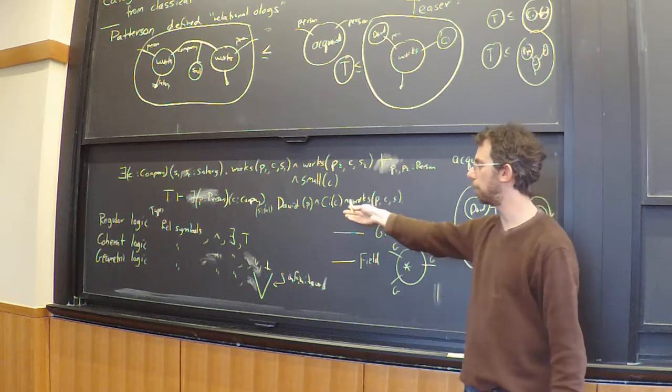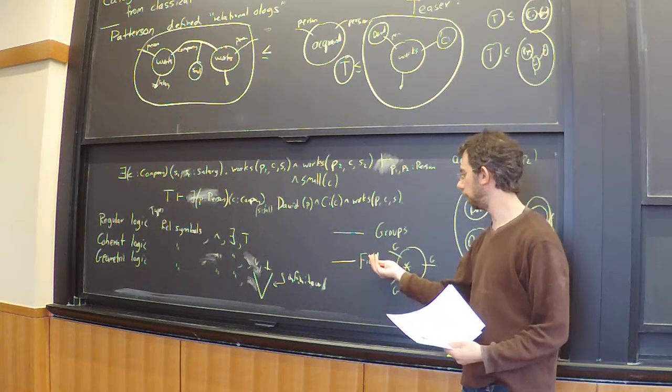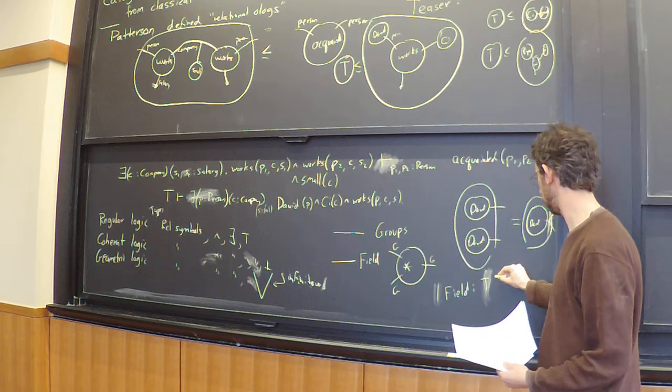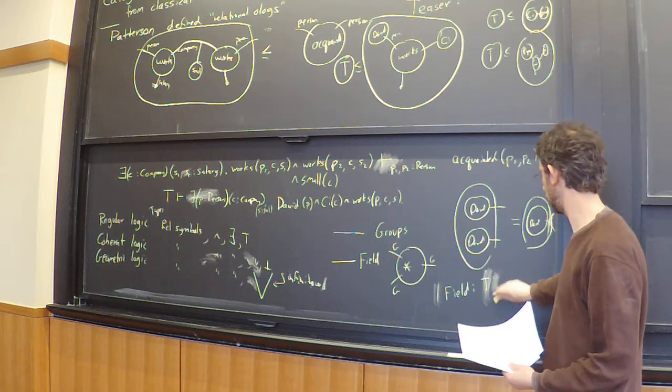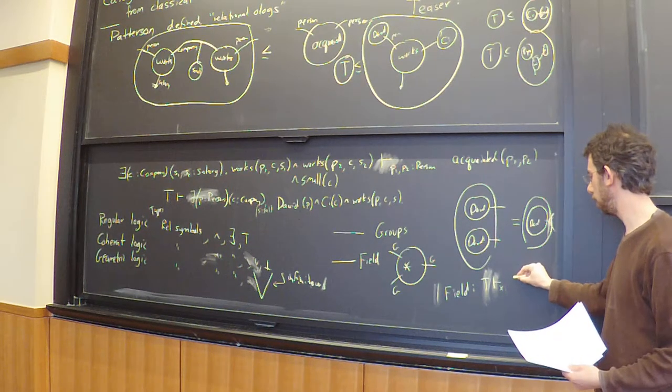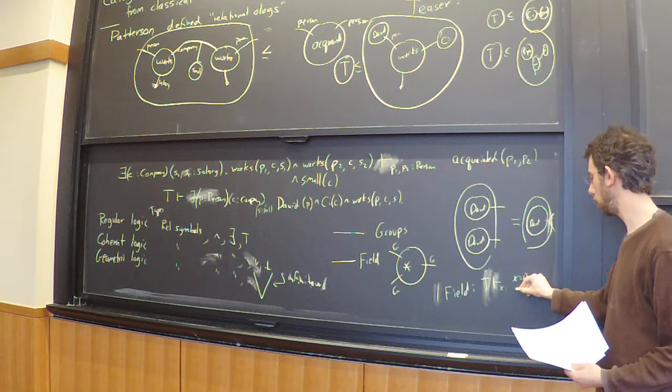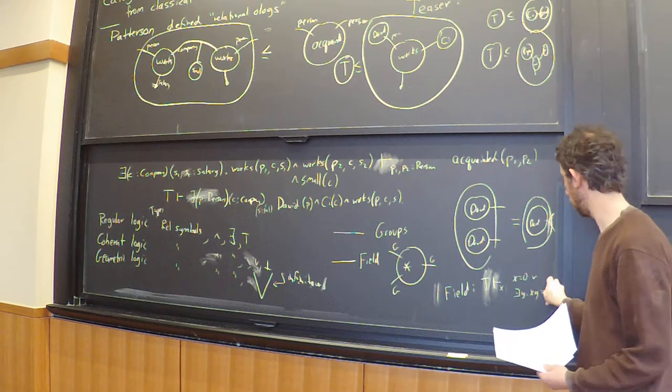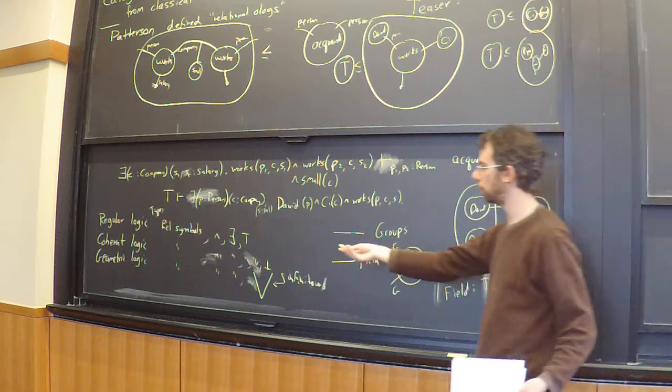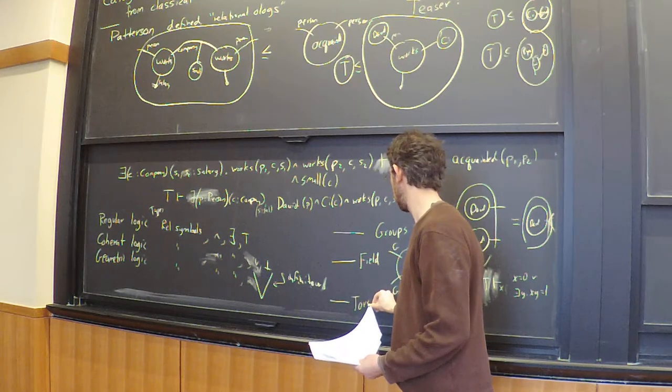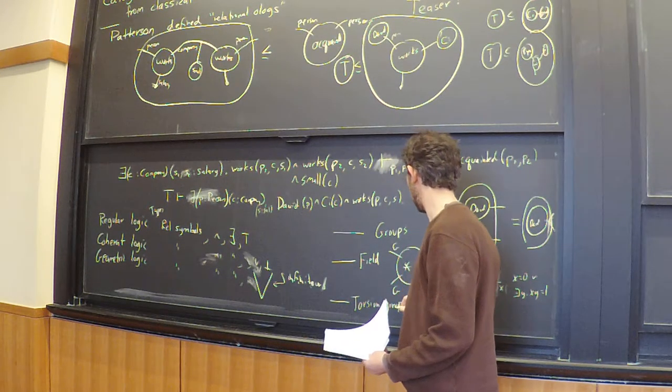With coherent logic you can say more stuff. You can say field, for example. You can't say field in regular logic, but you can say it in geometric and coherent logic. To say field you need to say something at some point like: for any x of my field, I have that either x equals zero or x has an inverse, or exists y dot xy equals one. That or is required, so I need coherent logic.